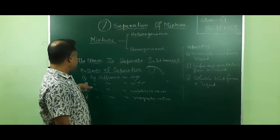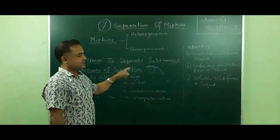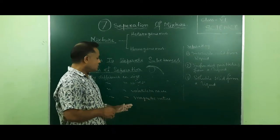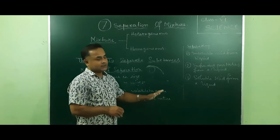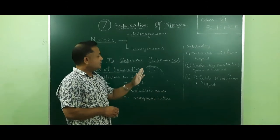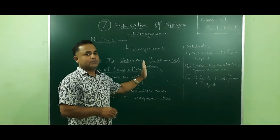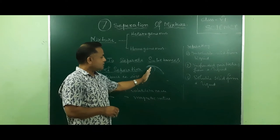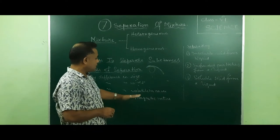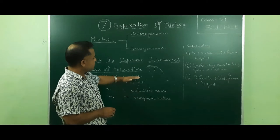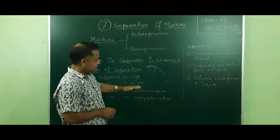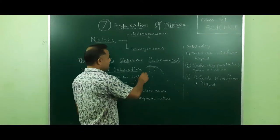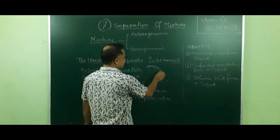Number four method: by difference in magnetic nature. If we talk about magnetic nature, it is obvious that in a mixture metals will be present. In this mixture, we cannot use the previous three types of methods of separation. So in this method, we put some magnets and use a roller, and we put all the mixtures on it, then allow it to flow over.